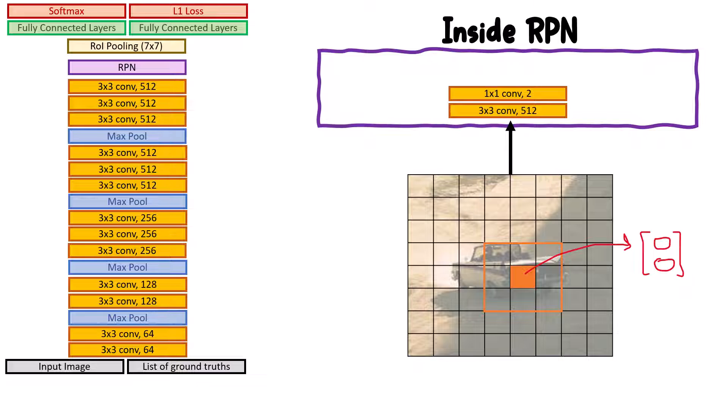For every anchor box, we produce a two-dimensional vector which equals the number of output channels, and pass it through a softmax to see which entry has the highest probability. For example, the first entry corresponds to the probability of an object being inside the anchor box, and the second entry is the opposite.